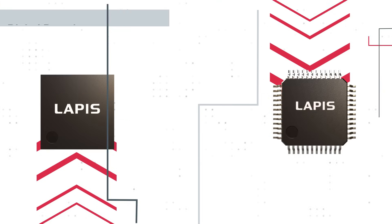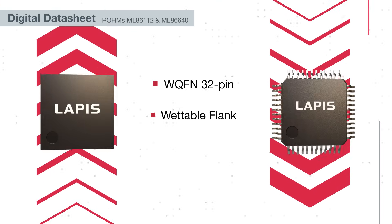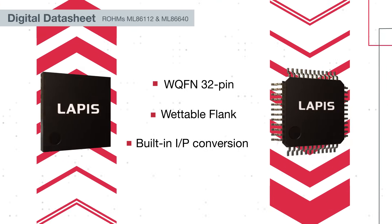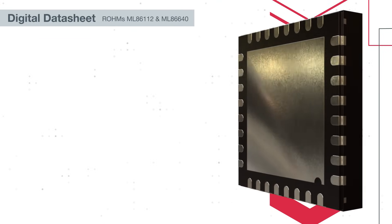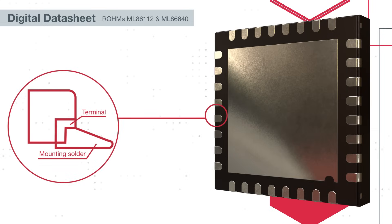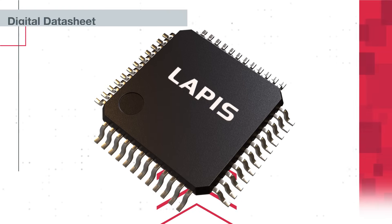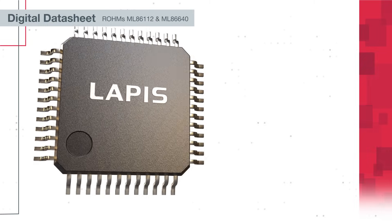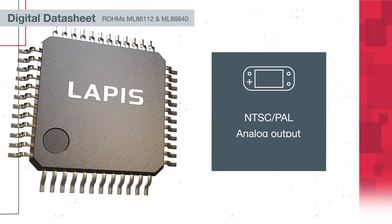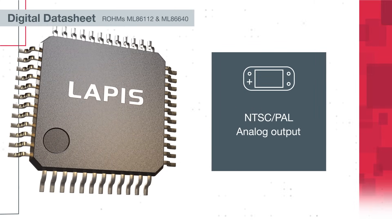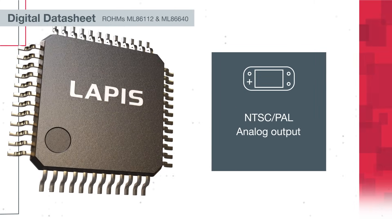Hosted in a WQFN 32-pin wettable flank package, the ML86112 also features an IP conversion function to reduce the SoC load. The ML86640 is a small footprint digital video decoder compatible with the NTSC and PAL format.